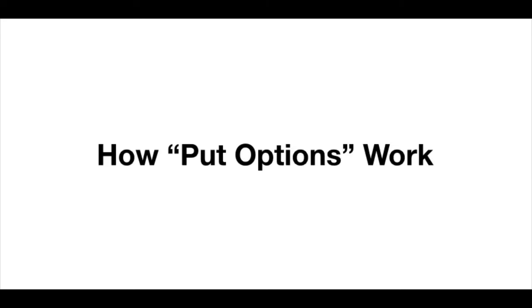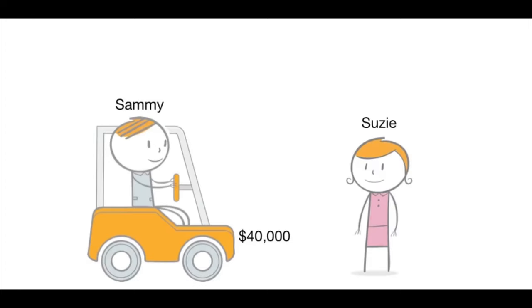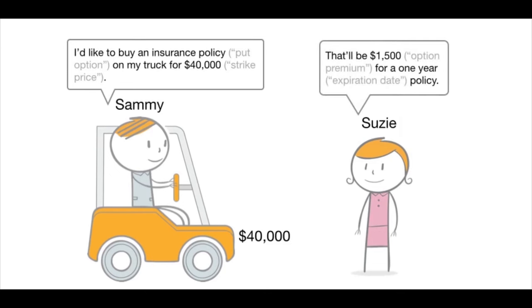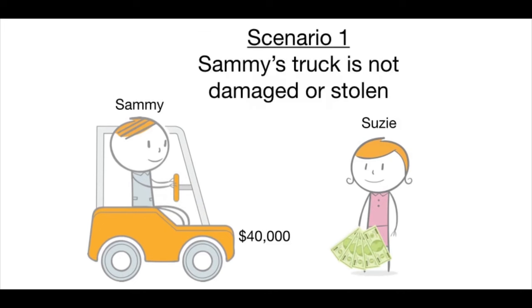Now let's look at how put options work. Sammy owns a truck worth $40,000 and is concerned it might be damaged or stolen. He decides to buy a zero-deductible insurance policy — a put option — on the truck for the full amount of $40,000, which is the strike price. Susie's auto insurance company charges him $1,500 — the option premium — for a one-year policy, with one year being the expiration date.